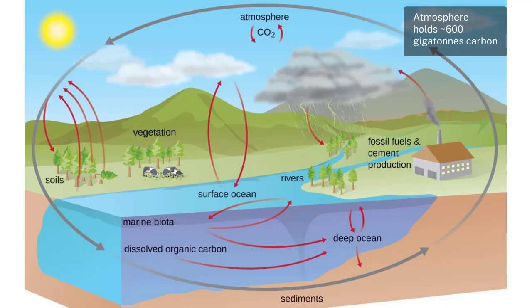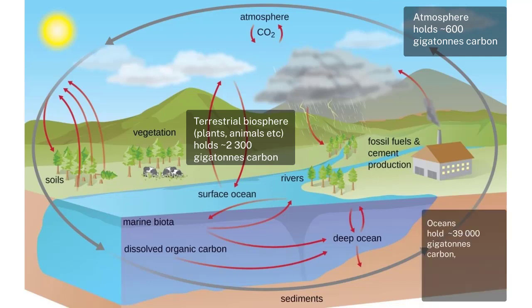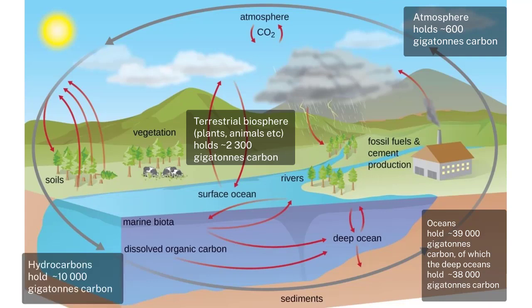Most of the carbon is locked away in rocks, and only a tiny fraction of the carbon on Earth exists on the surface. The atmosphere contains about 600 gigatons of carbon. The terrestrial biosphere is bigger, containing about 2,300 gigatons of carbon. The oceans are a massive reservoir containing 39,000 gigatons of carbon, and 38,000 of those are stored in the deep ocean. In addition, hydrocarbons that we're able to extract consist of about 10,000 gigatons of carbon. These rapid fluxes dwarf even the fluxes that we see through anthropogenic carbon emissions.